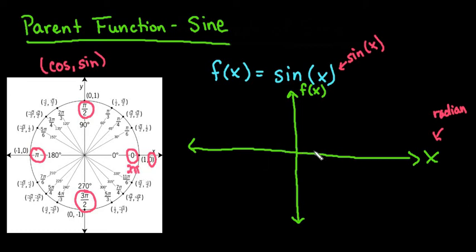So that's what I'm going to label my x-axis with: 0, pi over 2, pi, 3 pi over 2, and 2 pi.